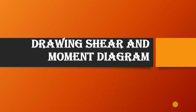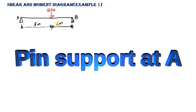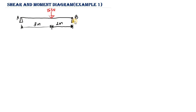Hello everyone. In this video we are going to be taking a look at how to draw shear and bending moment diagrams. This is example one. We have a simply supported beam with a point load of 15 kilonewtons acting 3 meters away from the support. We have a pin support at point A and a roller support at point B.